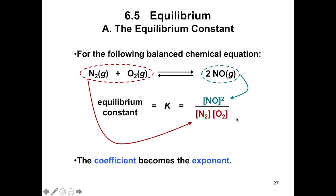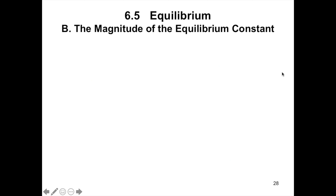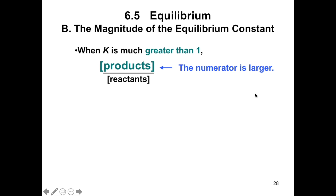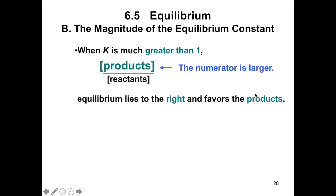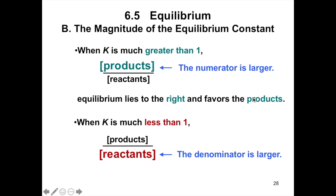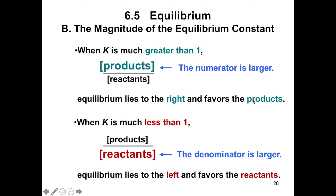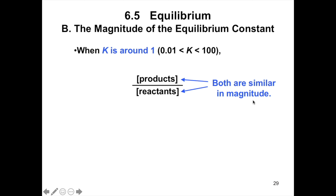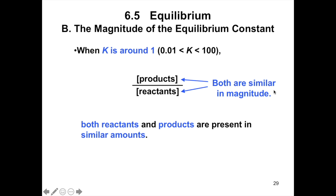The magnitude of the equilibrium constant tells us whether the products or reactants are favored once equilibrium is reached. When K is much greater than 1, the numerator is larger, so the equilibrium lies to the right and favors the products. When K is much less than 1, the denominator is larger, and the equilibrium lies to the left and favors the reactants. When K is around 1, both reactants and products are present in similar amounts.